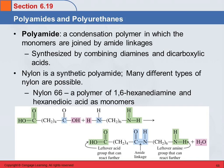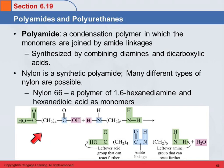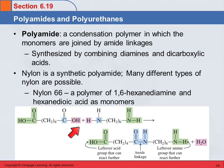Polyamides are synthesized by combining diamines and dicarboxylic acids. We were just talking about how you can make an amide with an amine and a carboxylic acid. In polymer formation, we've got a diacid, and the carboxylic acid on one side reacts with the diamine — with the amine on one end — and forms an amide linkage.